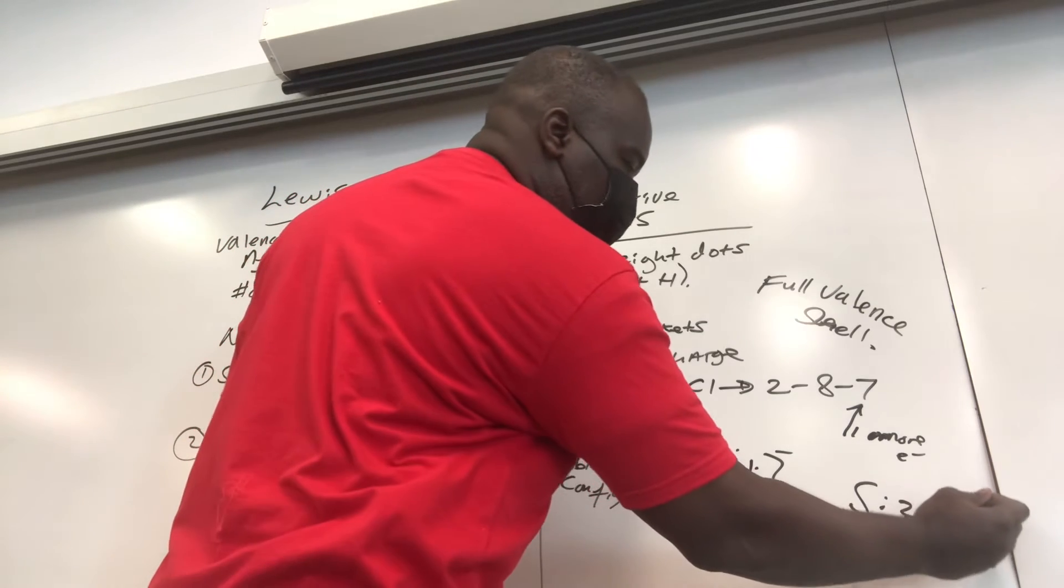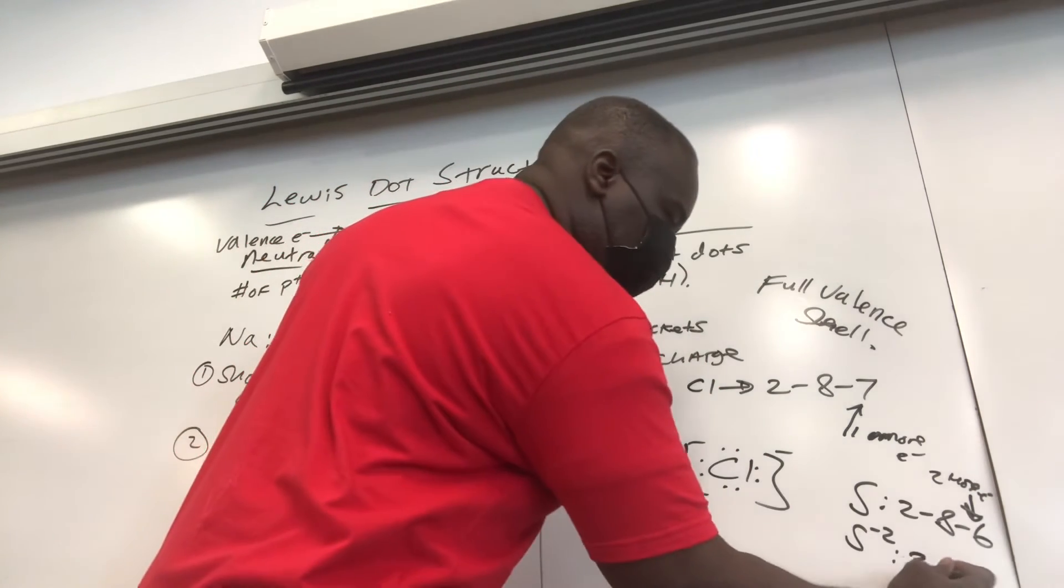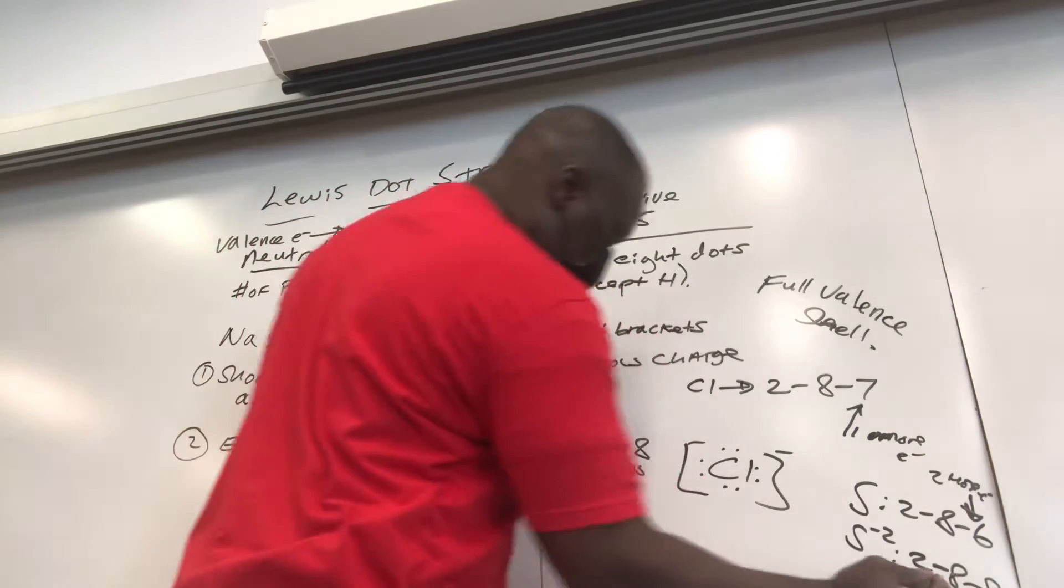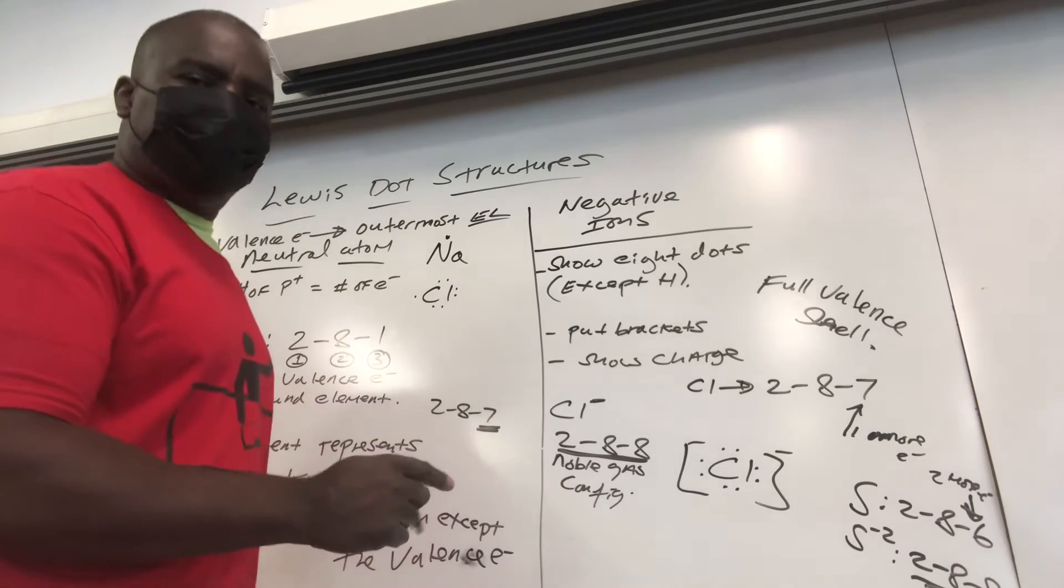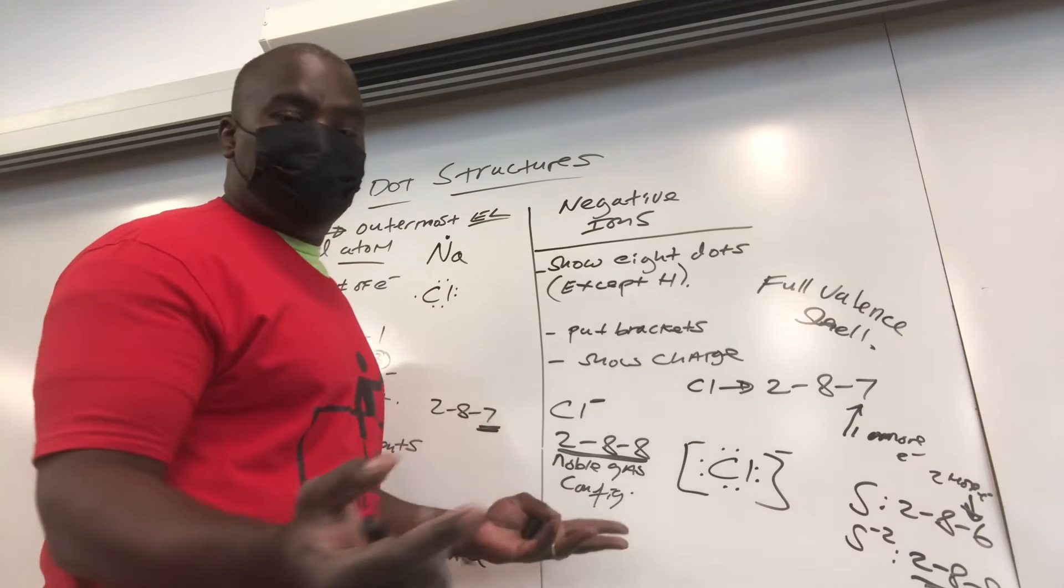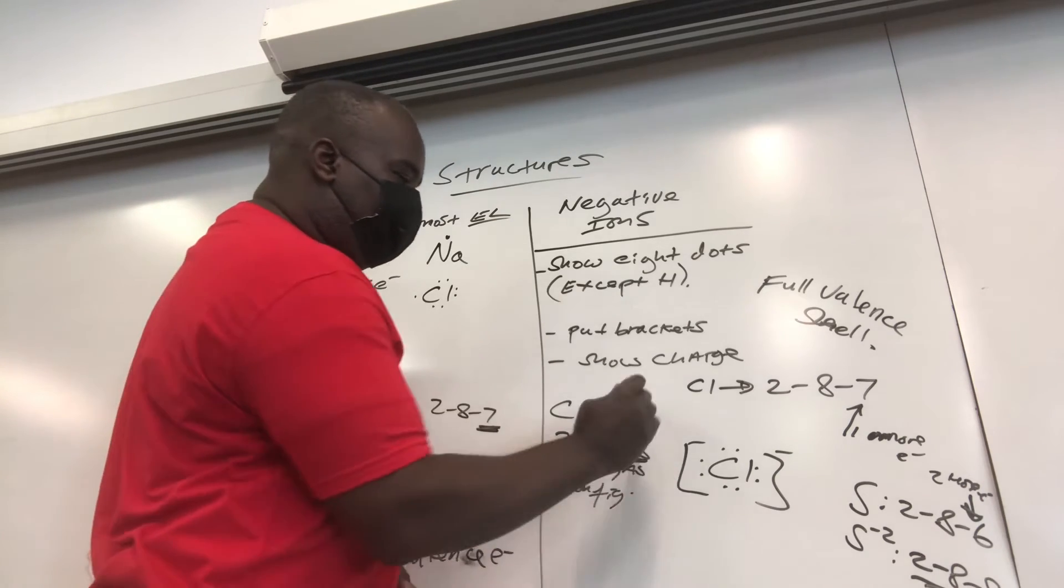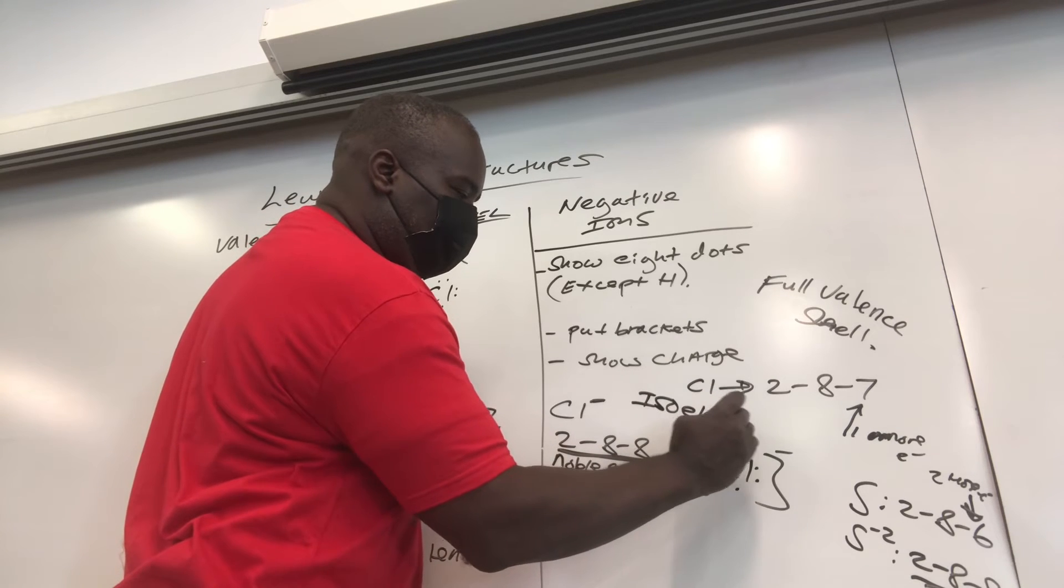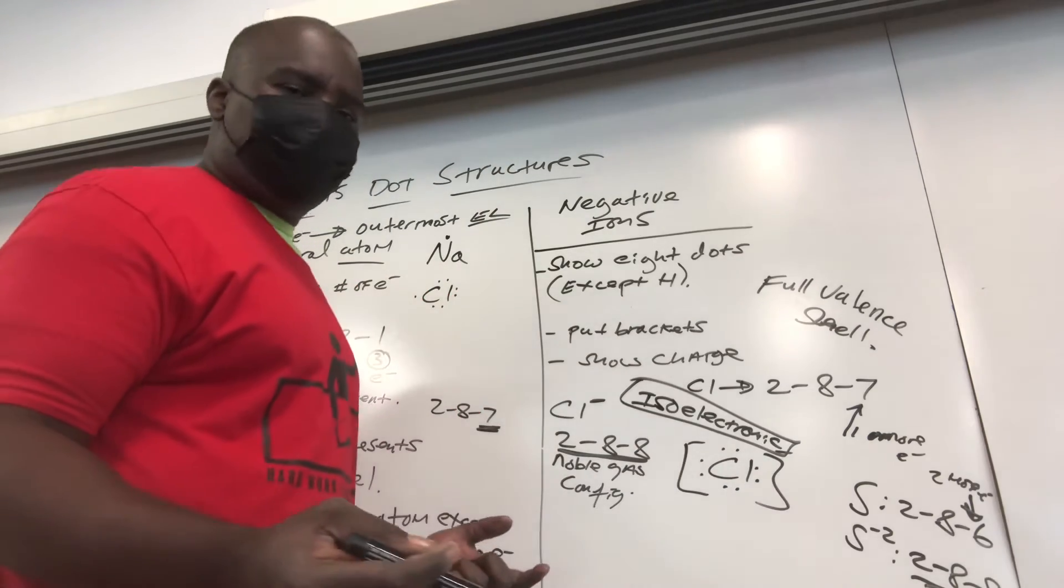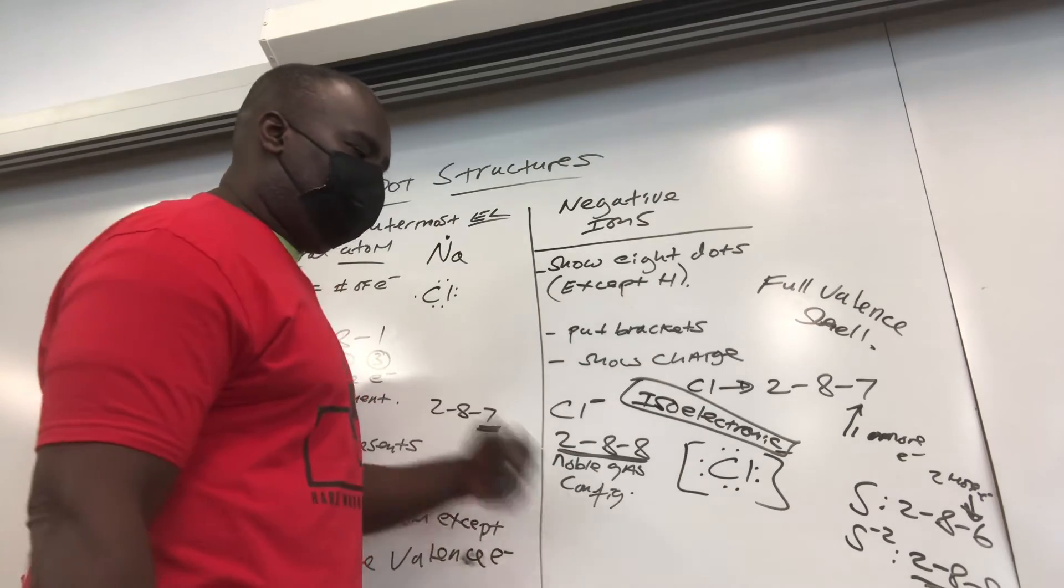Do you see it? Pattern. This is 2-8-8, this guy is 2-8-8. There's a special name for that. Anytime you have different substances with the same electron configuration, they are called isoelectronic. They're isoelectronic with each other. They have the same electron configuration. So they both have noble gas configurations of argon, if I'm not mistaken. No problem.